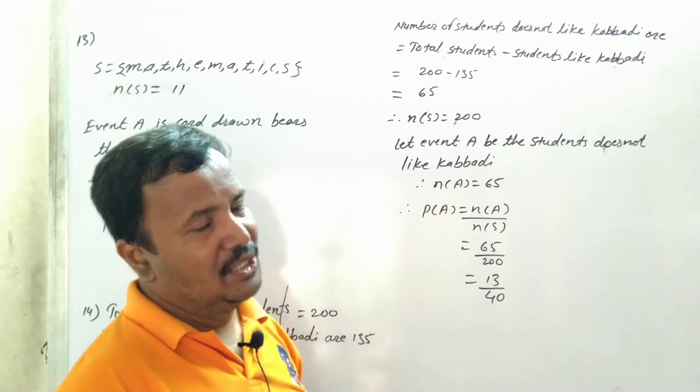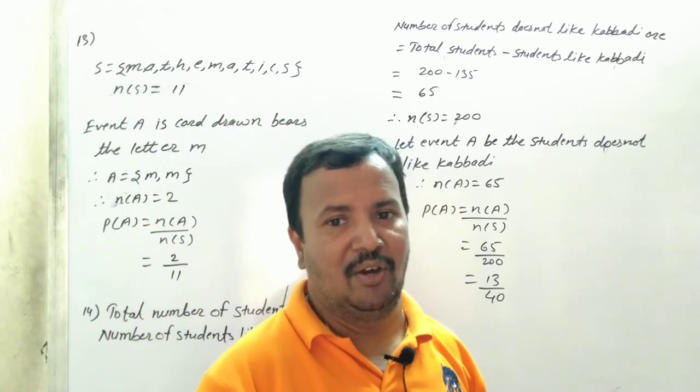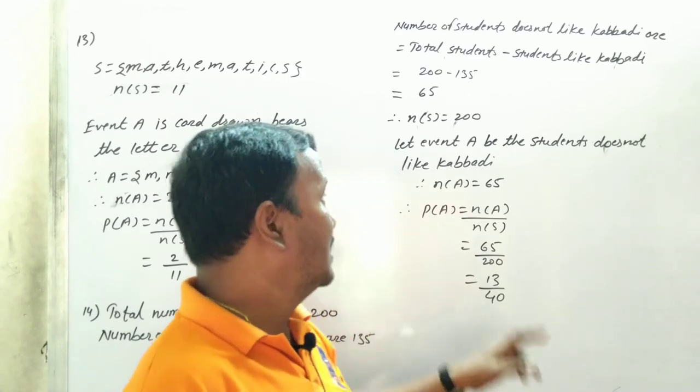Number of S is equal to 200. Because there are 200 students. Class में कितने बच्चे? 200 students है. And therefore what happens? Number of S is equal to what? 200.